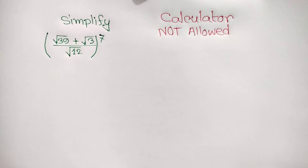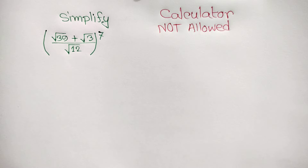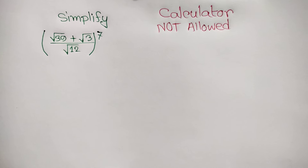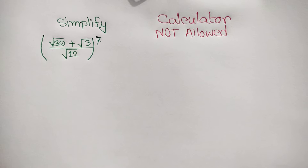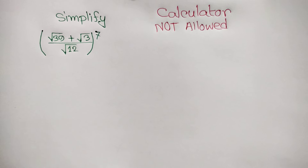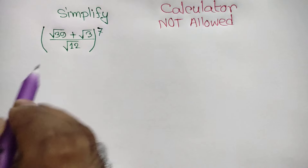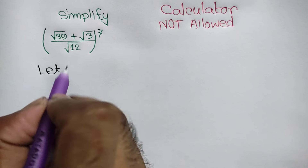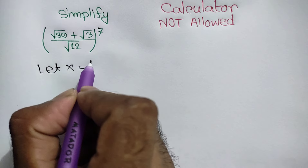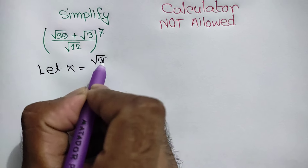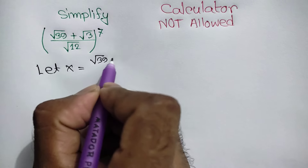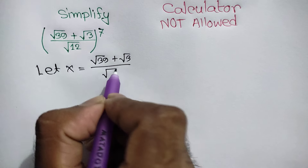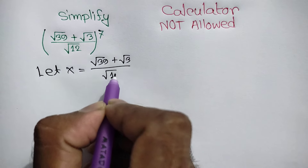Hi everyone. In this video, I am going to show how to simplify this math problem — calculator not allowed. Let x equal the square root of 39 plus square root of 3, over square root of 12.